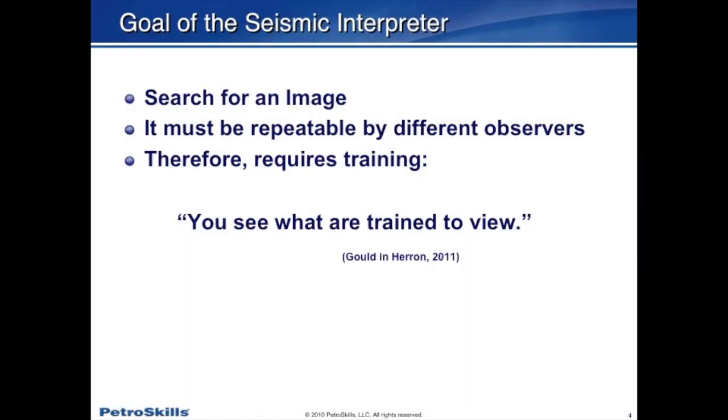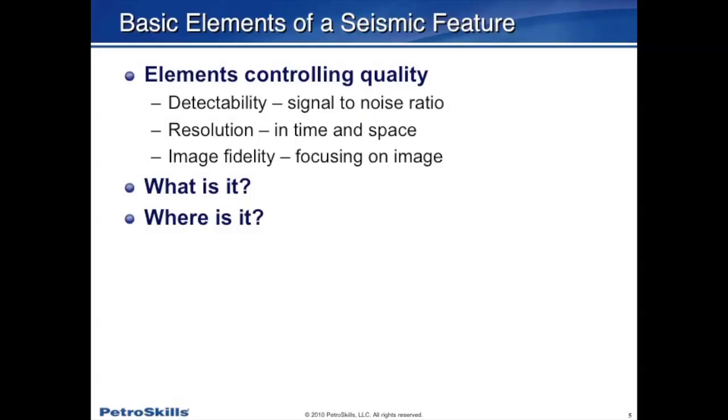The goal of the seismic interpreter is essentially we're searching for some image in the seismic data. We need it to be repeatable by more than one observer — if two people look at the same data set they can see essentially the same thing. Therefore it requires training; there's a famous quote that says you see what you're trained to view. The basic elements that control the quality of your interpretation are things we call detectability, which is your ability to see things in the seismic image, and that's controlled to a large extent by signal to noise.